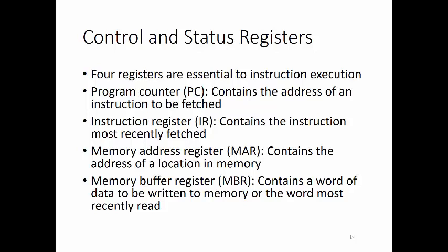Not all processors have internal registers designated as the memory address register or the memory buffer register. But some equivalent buffering mechanism is needed. Typically, the processor updates the program counter after each instruction fetch, so the program counter always points to the next instruction to be executed. A branch or a skip instruction will also modify the contents of the program counter. The fetched instruction is loaded into the instruction register where the opcode and operand specifiers are analyzed. Data are exchanged with memory using the memory address register and the memory buffer register.